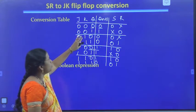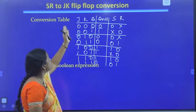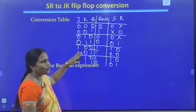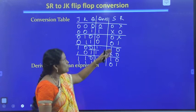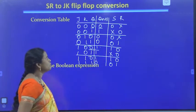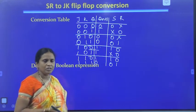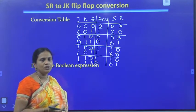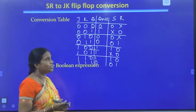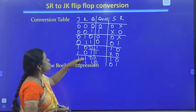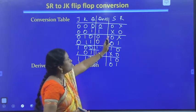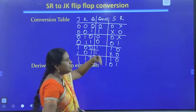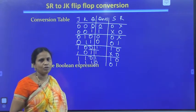The conversion table is now complete. The procedure for writing the conversion table: first write the required flip-flop inputs (JK), then write the present state and next state, and then write the available flip-flop inputs (SR) by using the excitation table. Next, we need to derive Boolean expressions for S and R.